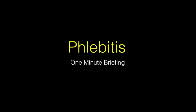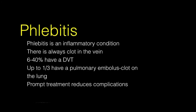Phlebitis is an inflammatory condition of the vein and it is always associated with clot formation in the vein, which can spread and propagate into the deep veins. These clots can break loose and travel around to the lungs. Some studies suggest that up to a third of people with phlebitis will develop clots in the lungs based on careful lung scans.